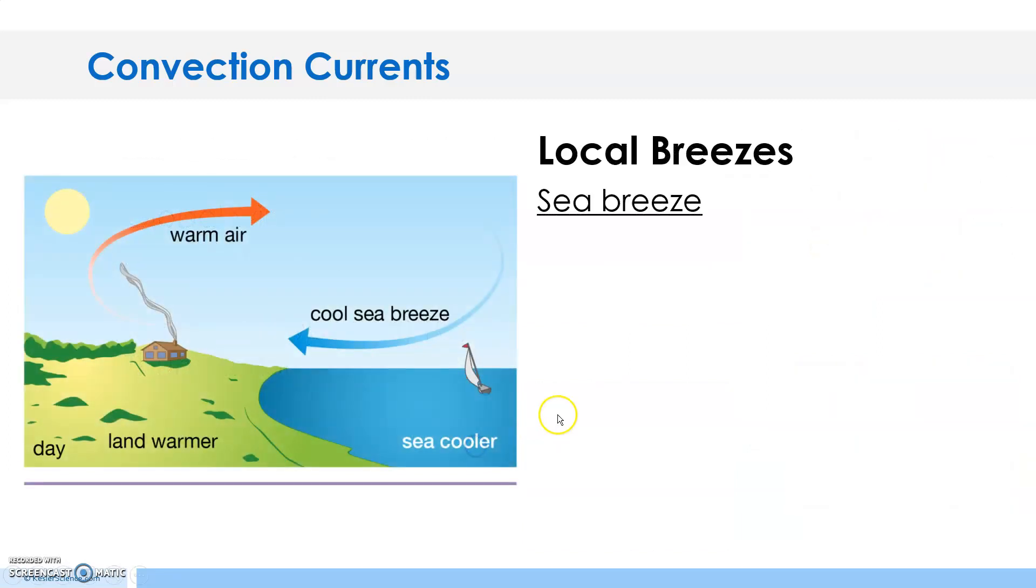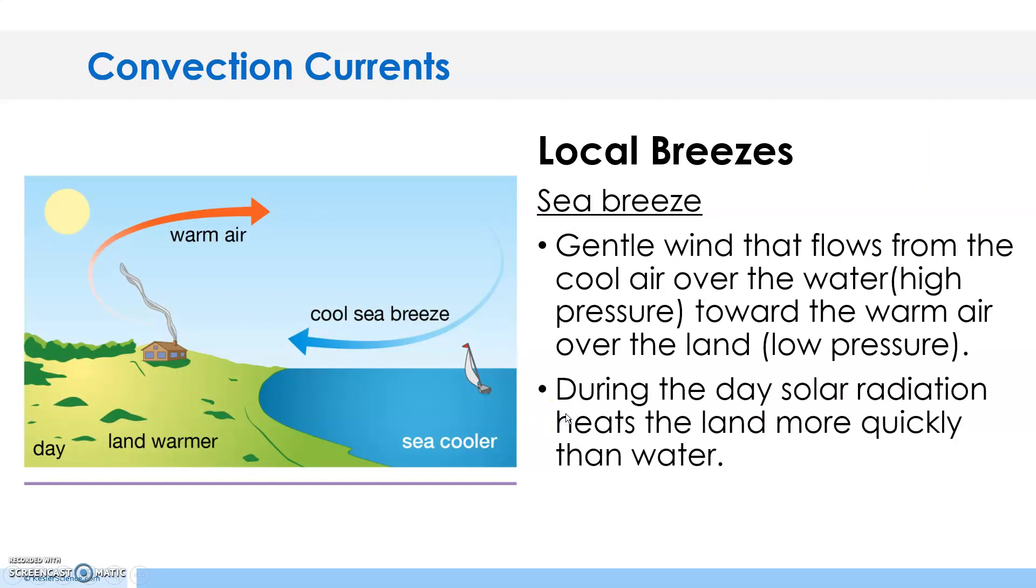So let's look at the local breezes. There are two types we're going to talk about. Sea breeze first: sea breezes are gentle winds that flow from the cool air over the water - cool air, high pressure - towards the warm air over the land - warm air, low pressure. During the day, solar radiation heats the land more quickly than the water, so the land is warmer in the day and the sea is cooler during the daytime.